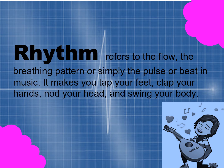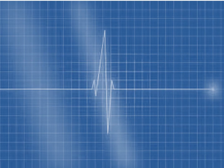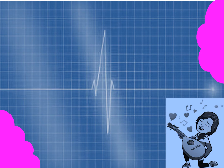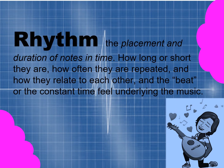Now let us talk about rhythm. Rhythm in music refers to the flow, the breathing pattern, or simply the pulse or beat in music. It makes you tap your feet, clap your hands, nod your head, and swing your body. Rhythm is also the placement and duration of notes in time — how long or short they are, how often they are repeated, and how they relate to each other. The beat is the constant time feel underlying the music.